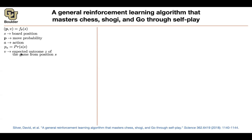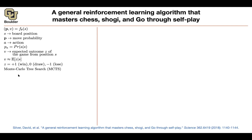V is the expected outcome — you want V to be the expected value of the outcome. Unlike Go, which was win or lose, for something like chess you can have win, draw, or lose. We're going to still do Monte Carlo tree search to give us the data necessary to train this neural network.